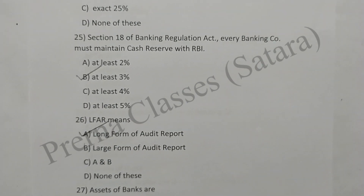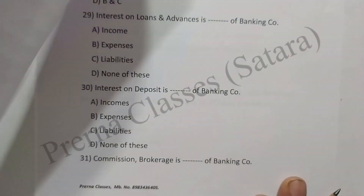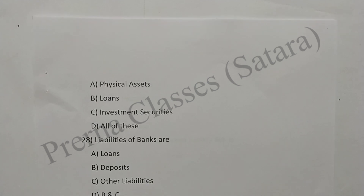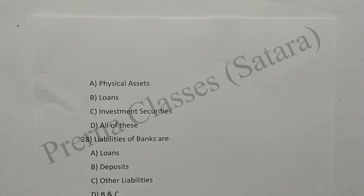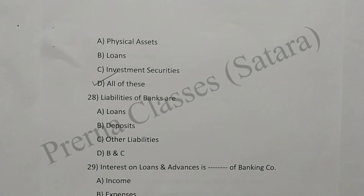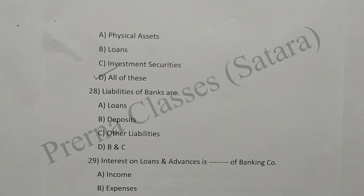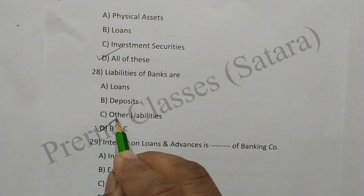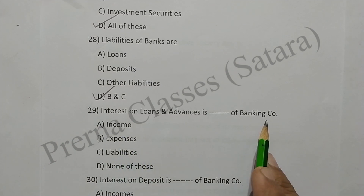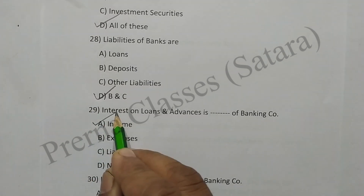Question 27: Assets of banks include physical assets, loans, investment securities, and all of these. Option D is correct. Question 28: Liabilities of banks are loans, deposits, other liabilities — B and C. Option D is correct. Question 29: Interest on loans and advances is an income of the banking company. Option A is correct.